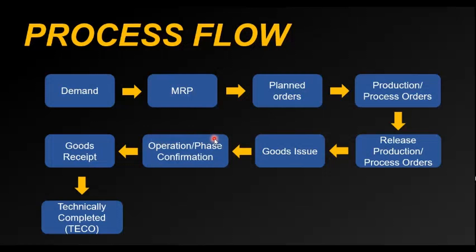One example of a phase is the blending operation in a pharmaceutical industry — mixing all raw materials and APIs into a blender. In discrete manufacturing, an operation is an activity performed using a component, such as a cutting, milling, or drilling operation on the shop floor. Once the components have been consumed, we proceed with execution of the operation.